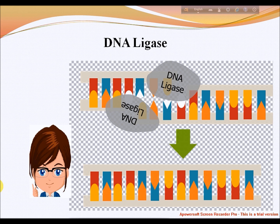It plays a role in repairing single-strand breaks in duplex DNA in living organisms, but some forms, such as DNA ligase 4, may specifically repair double-strand breaks. Single-strand breaks are repaired by DNA ligase using the complementary strand of the double helix as a template, with DNA ligase creating the final phosphodiester bond to fully repair the DNA.